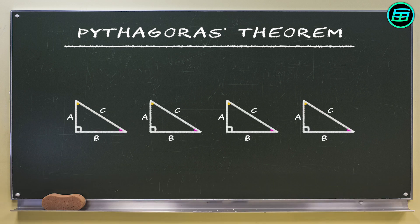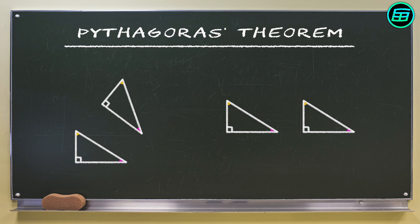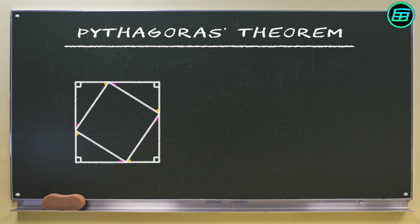We start off with four identical right triangles like this. This gives us one large square and a small square inside it.